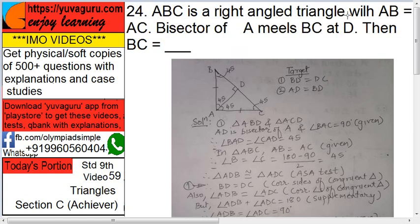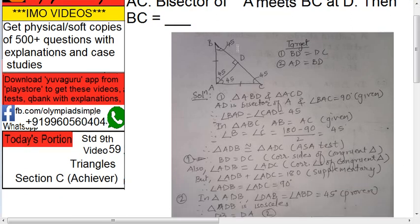ABC is a right angle triangle with AB equals to AC and bisector of A meets BC at D. Then BC equals to - this is really tough one. See this, ABC is a right angle triangle at right angle at A and bisector of A meets BC at D.